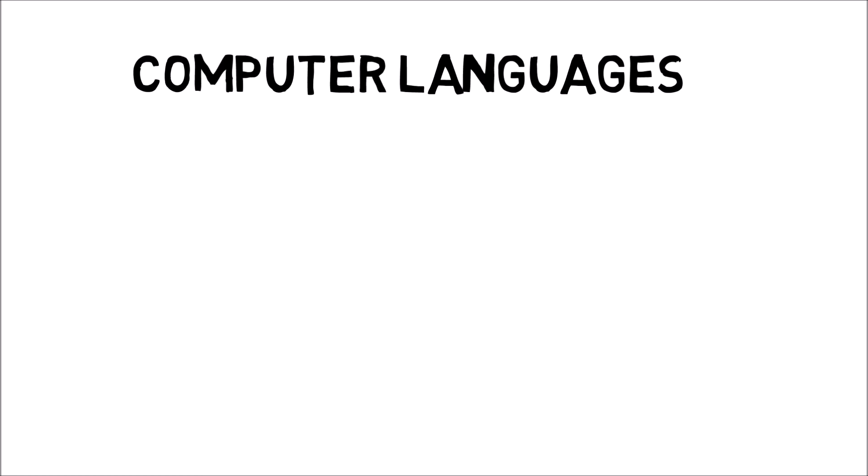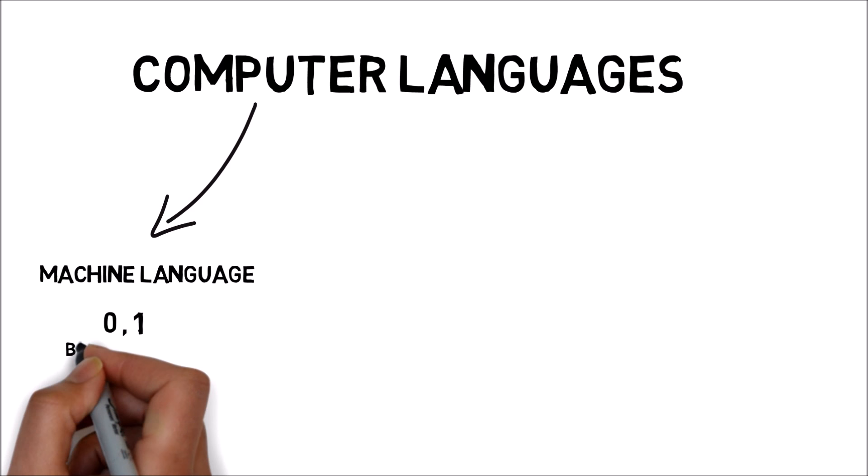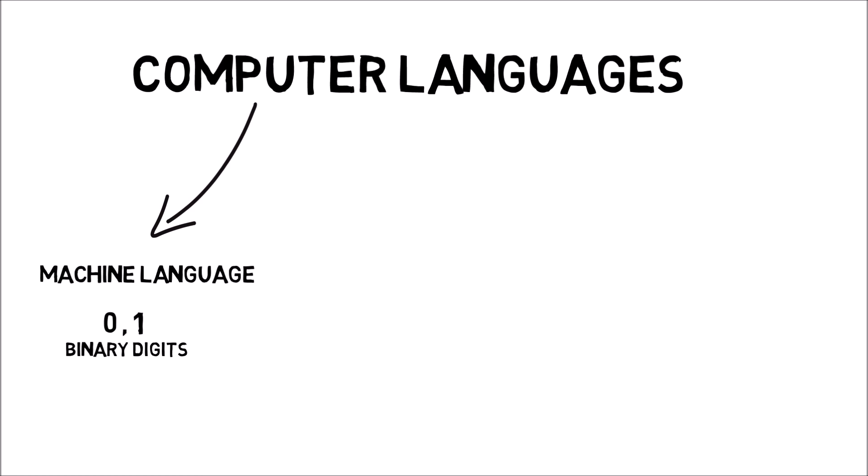We are talking about the language of the computer. The first language we speak in the language of computer is in a digital shape. Computer language is in a machine word — the language the computer speaks is called machine language. Machine language means the language used by the computer, and it is automatically generated. Machine language means 0 and 1, which is presented in binary language.